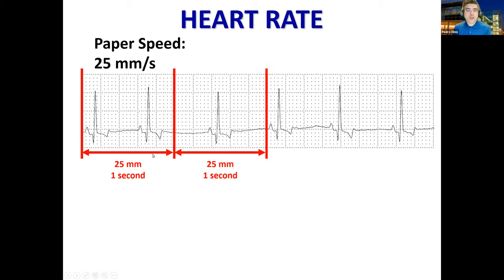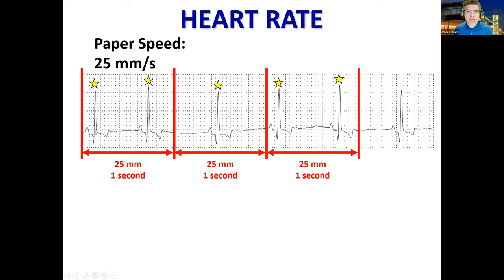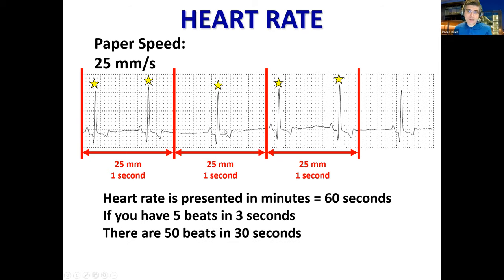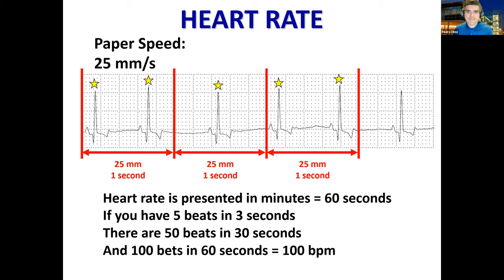You want to calculate the heart rate over more than 1 second. We can calculate for 3 seconds and count the number of R waves from the QRS complexes — in this case we have 5. So we have 5 beats in 3 seconds. Since heart rate is in beats per minute, if you have 5 beats in 3 seconds, you'd have 50 beats in 30 seconds, which means the heart rate is 100 beats per minute.